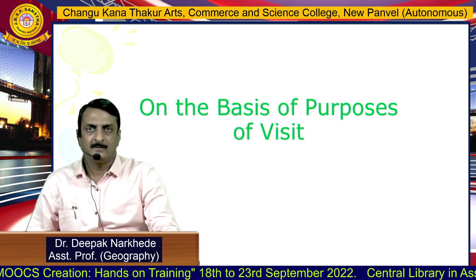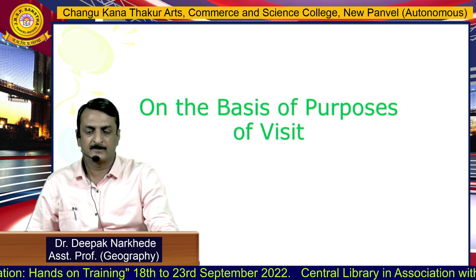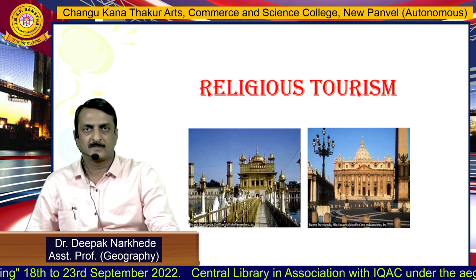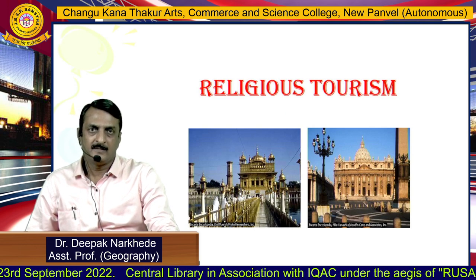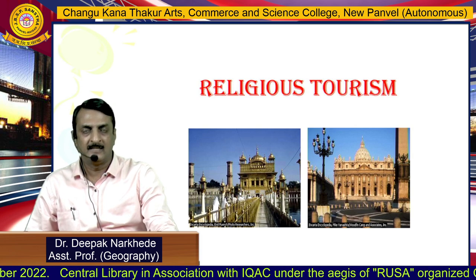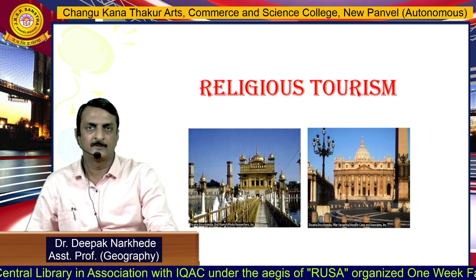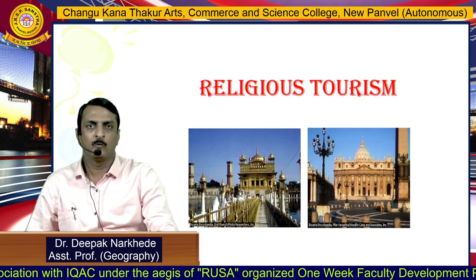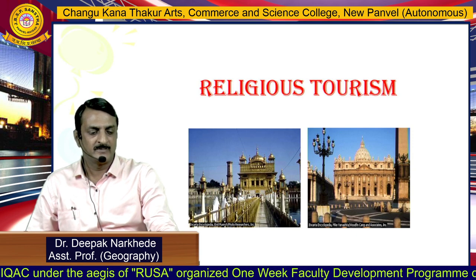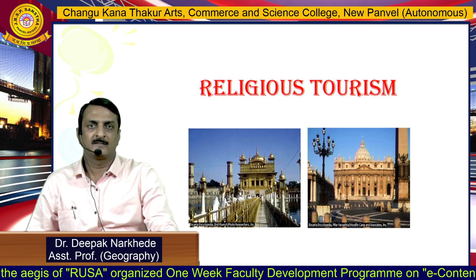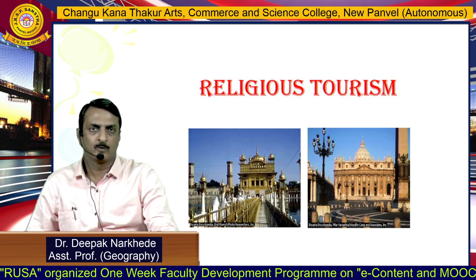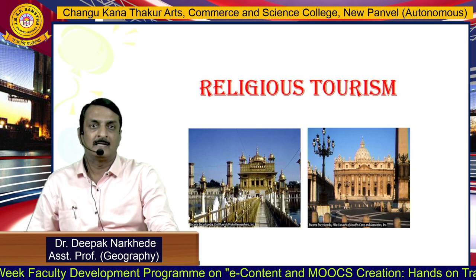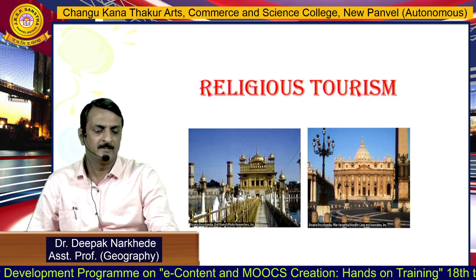The more popular classification of tourism is based on the purposes of visit. The first type is religious tourism, where people visit religious places. People who have faith in God or who are going for religious rituals visit such places. In this picture you can see the photograph of Amritsar's Golden Temple, and another photograph is of Vatican City, where Christian people visit for their religious purposes.